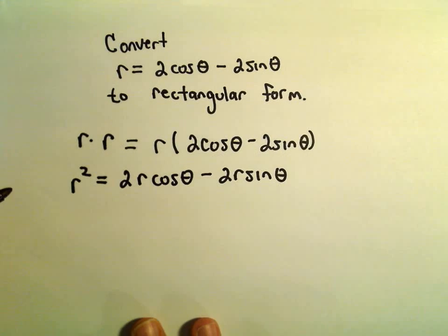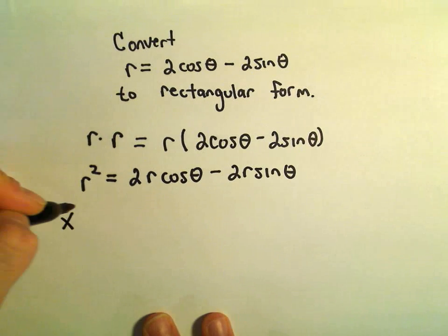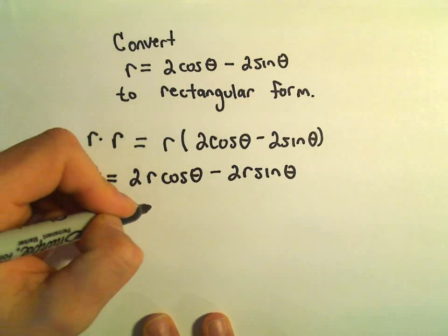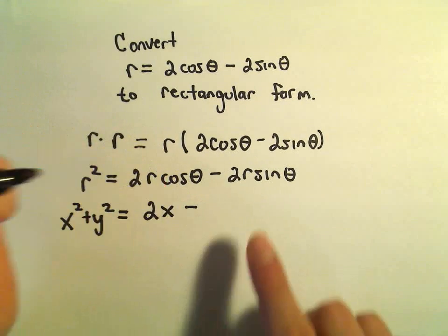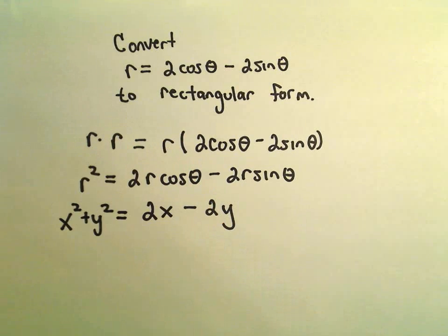But now we can start replacing. So r squared is just going to be x squared plus y squared. r cosine theta, that's the same thing as x. r sine theta is the same thing as y.